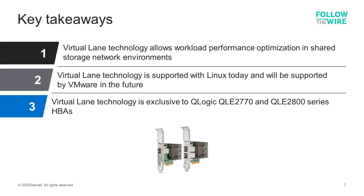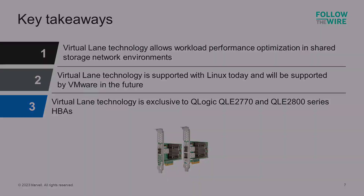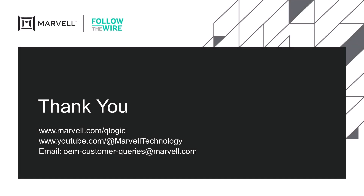Here are the key takeaways as it relates to virtual lane technology. This technology allows workload performance optimization in fiber channel shared storage network environments. It is supported with Linux today and with Cisco switches, and will be supported by VMware in the future. Virtual lane technology is exclusive to Q-Logic QLE2770 and 2870 series HBAs, as it is baked into the actual design of the fiber channel ASICs, firmware, and drivers. For more information, go to www.marvell.com/Q-Logic for all the details.